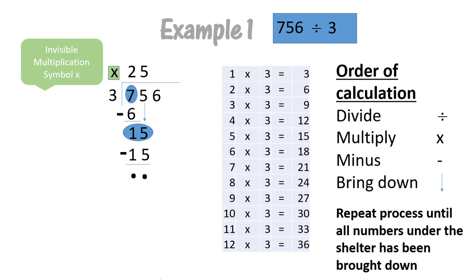Our sum's not complete because there's one more number underneath the shelter — number six. So we bring down number six and we start the order of calculation again. How many times can three go into six? Three can go into six twice. We multiply: two times three equals six. And six minus six equals zero. In this example, our remainder is zero, so you don't have to write it at the top. Your sum is now complete.